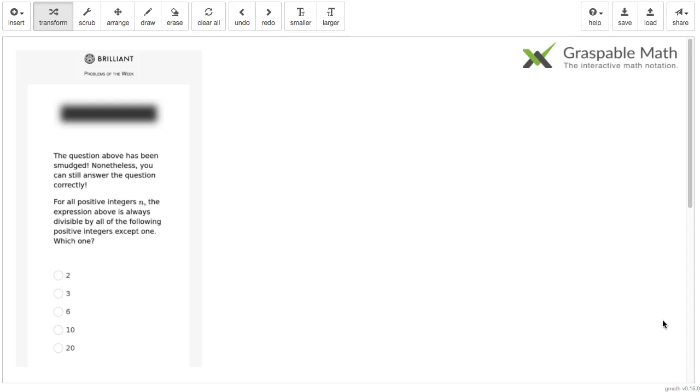So the thing the question asked for is that we have an expression. We don't know what the expression is. It's smudged up here. But we know that for all positive integers n, the expression above is always divisible by all of the following positive integers except one.